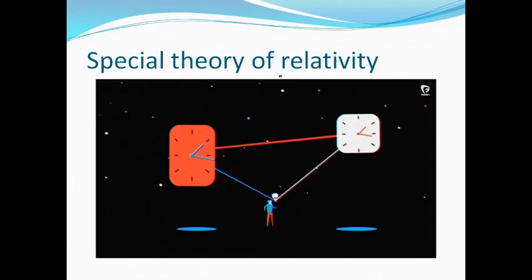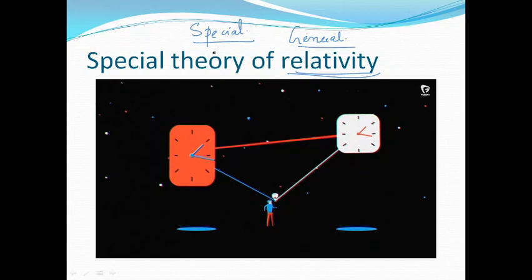The third and most important contribution by Albert Einstein is in the field of relativity. When we speak about relativity, there are two correlated theories: the special theory of relativity and the general theory of relativity. The special theory of relativity, proposed by Albert Einstein in 1905, showed how the measurement of time and space are affected by the relative motion between the observer and the thing being observed.